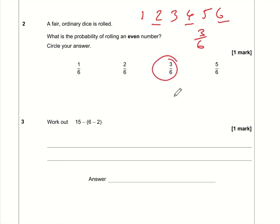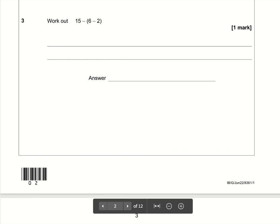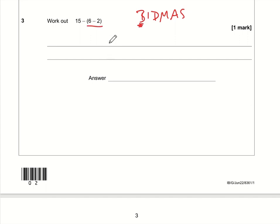Question number three we need to be thinking about the laws of BIDMAS. The B stands for brackets so we need to do the brackets first. Six take away two is four, so the question is now 15 take away four, and of course 15 minus four is 11.